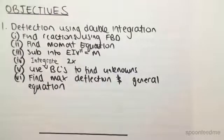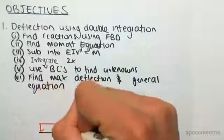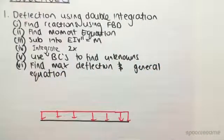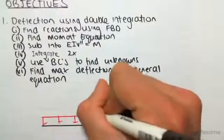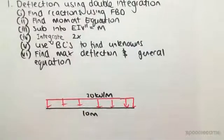For our case, we're going to be doing just a standard UDL. This is case one. Let's say this UDL is 20 kilonewtons per meter and the length of this beam is 10 meters. It's just a simply supported beam, pin and roller.